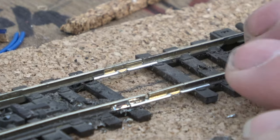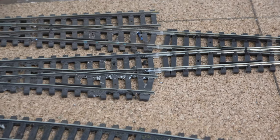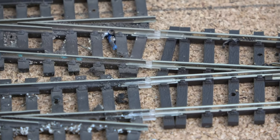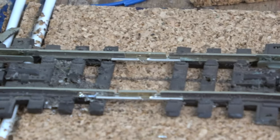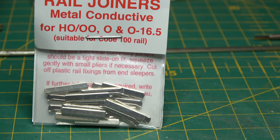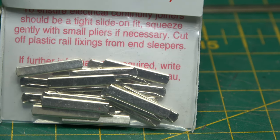With the diamond crossover attached to the other end, I'm going to call that a successful mission. Now this problem will occur with your code 75 or code 100 rail because essentially the points are the same size, so let's now see if we can do the same thing with code 100 track.